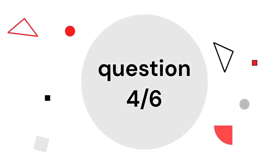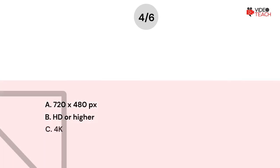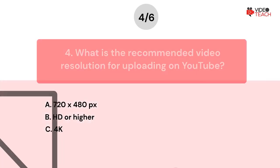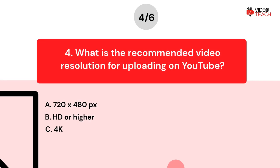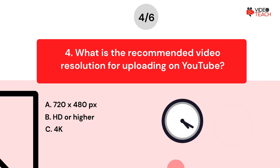Question number four. What is the recommended video resolution for uploading on YouTube? Option A, 720 to 480 pixels. Option B, HD or higher. Option C, 4K. Now you have about 15 seconds to think about your answer.